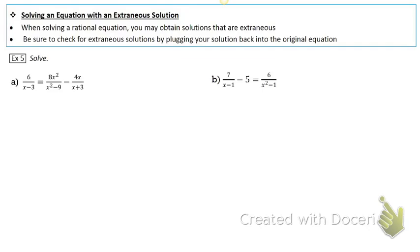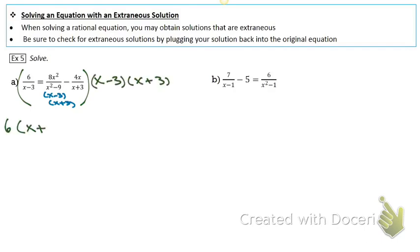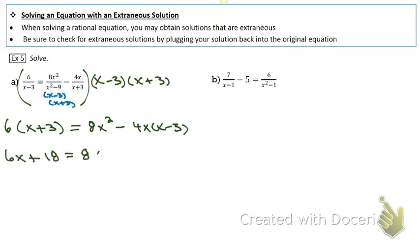Make sure you check your solutions for extraneous solutions. You want to factor the denominator — we can factor out the difference of squares — so our common denominator is (x minus 3)(x plus 3). You can cancel an (x minus 3) with the first and second fractions and an (x plus 3) with the third fraction. Don't forget to distribute your negative 4x.